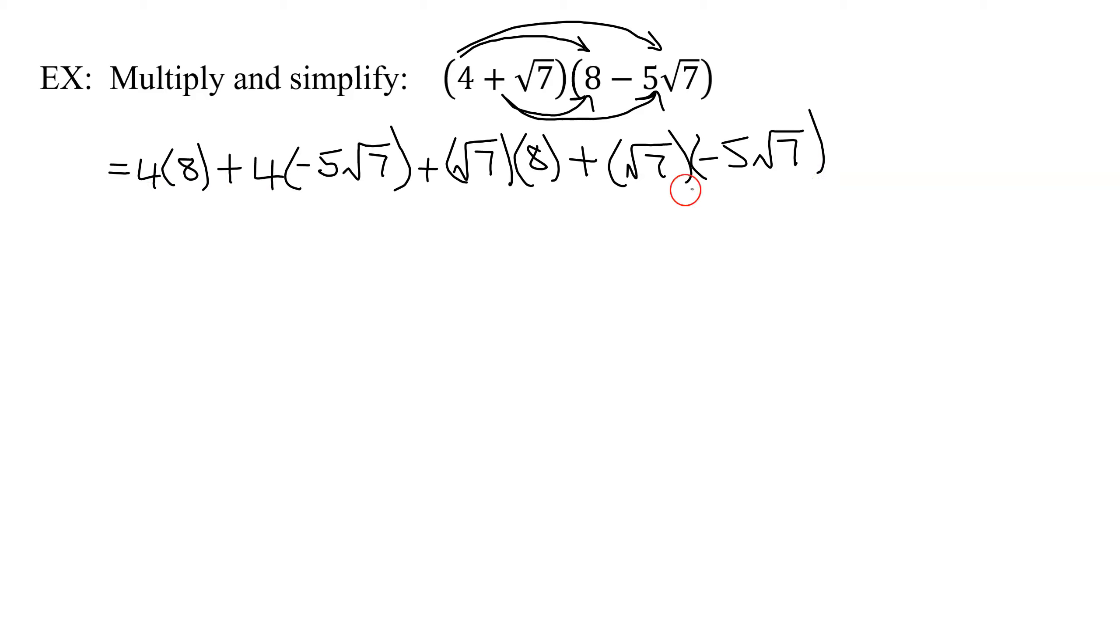Now we need to simplify our answer. 4 times 8 is 32. Here we have 4 times negative 5 times the square root of 7. So I'm going to multiply 4 times negative 5 to give me negative 20 times the square root of 7. Plus the square root of 7 times 8, we normally write as 8 times the square root of 7.